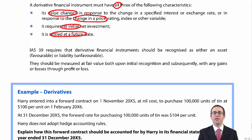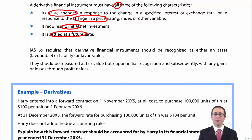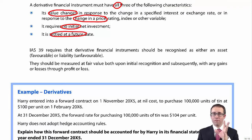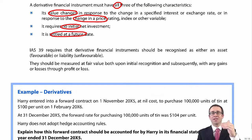We're not going to go any further than a forward contract at this level, but futures, options, and swaps at later levels are other examples of derivatives. A forward contract is simply a contract to buy an agreed amount at a set rate at a set date.